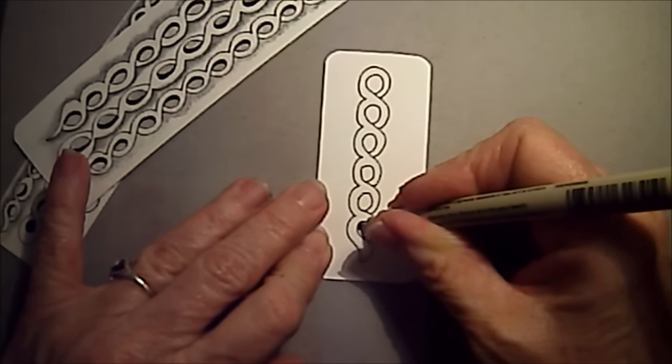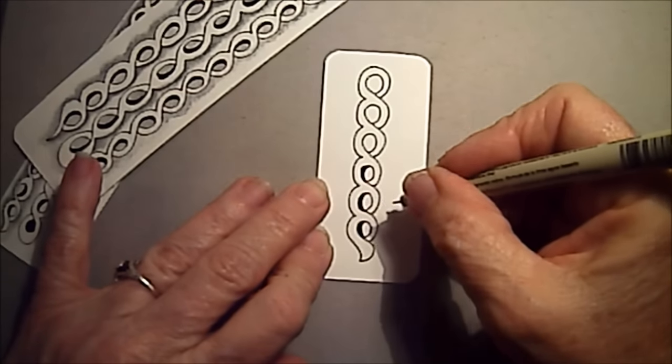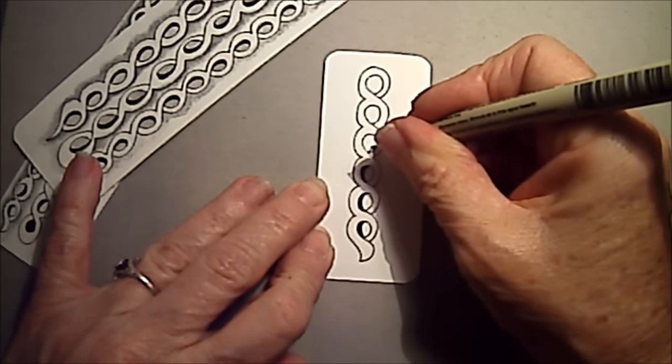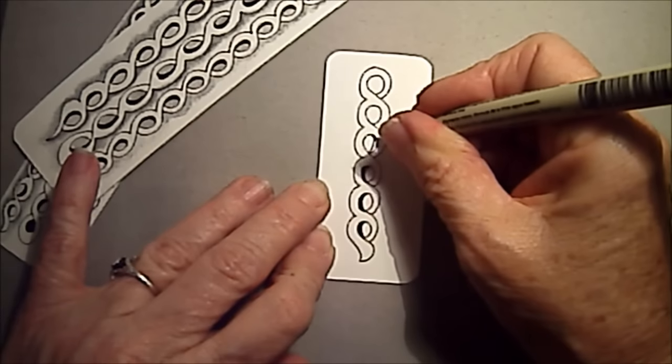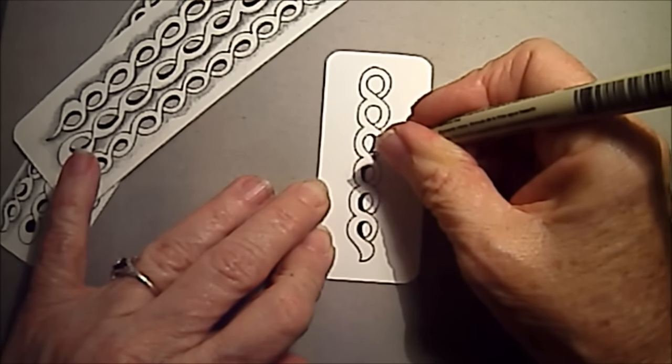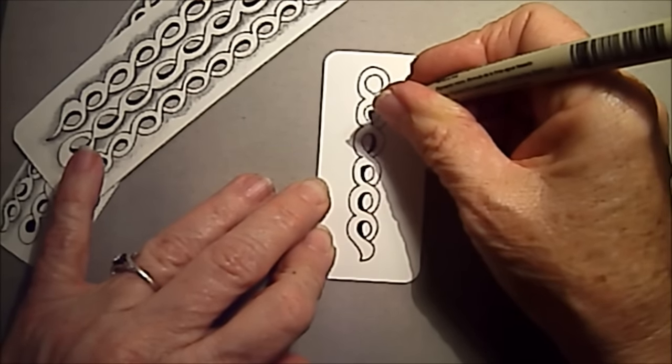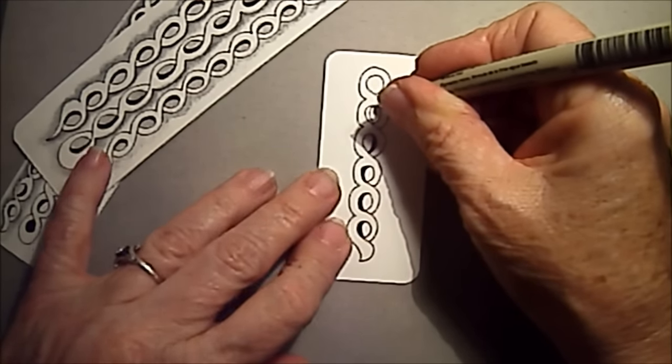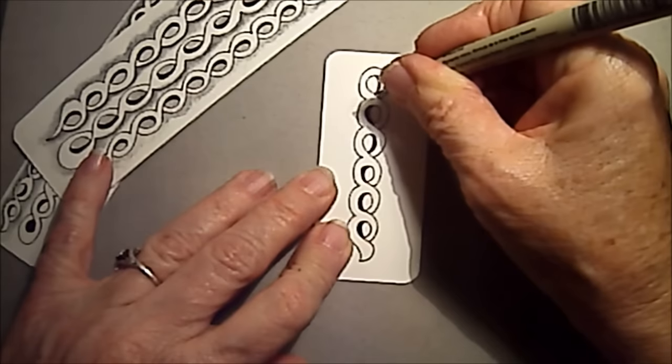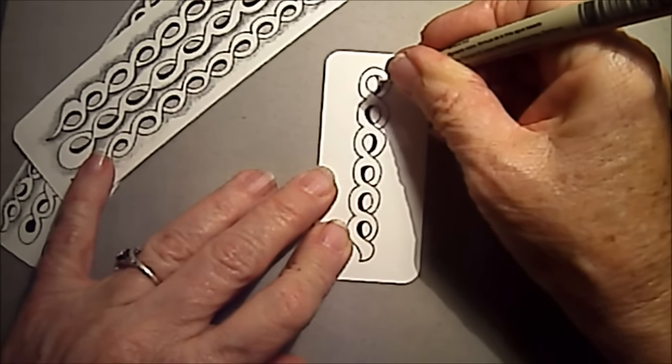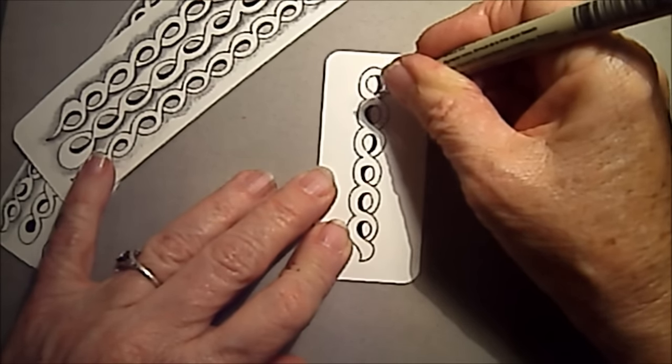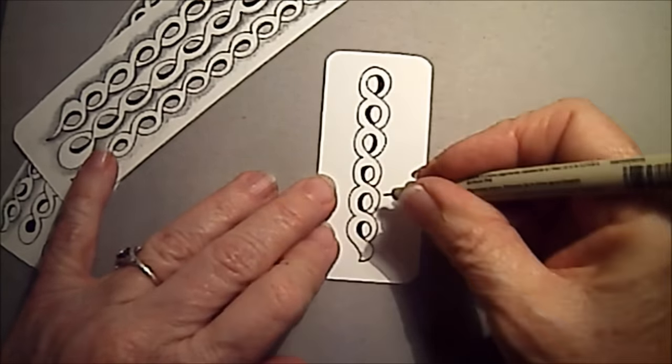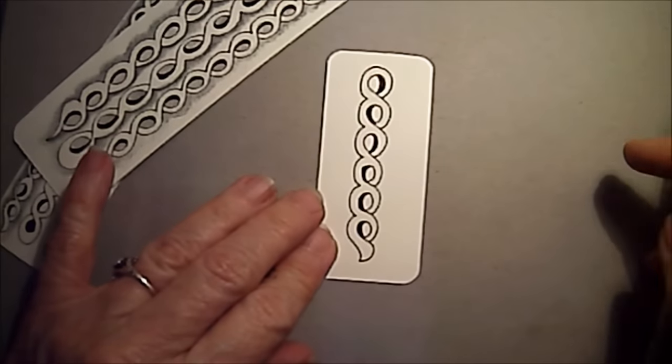And as I was doing this, I noticed that I could even give it more dimension if I alternated the shading, or the coloring in, to alternate going back and forth from either side. It also helps give it some dimension. And there we have Schneck.